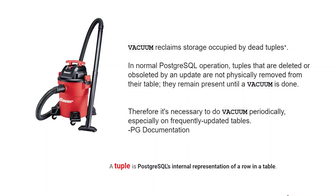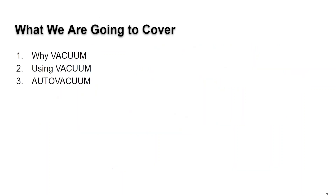A lot of this is directly from the Postgres documentation. Dead tuples — what the heck is a dead tuple? A tuple is Postgres's internal representation of a row in the table. As you change a row in a table, you have multiple tuples out there: one's active, and the older version of it is inactive. So what we're going to cover in this episode today is why vacuum, using vacuum, and talk a little bit about auto-vacuum.